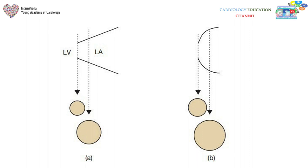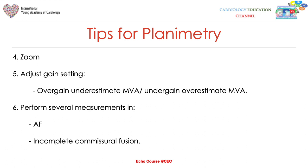Be aware that a slight movement toward the left atrium or left ventricle can change the area dramatically even if the shape still appears stenotic and circular. Always find the narrowest area at the mitral valve tips. Use the zoom method for accuracy, adjust gain settings carefully — over-gaining underestimates mitral valve area, while under-gaining overestimates the area due to dropouts being included in the trace.